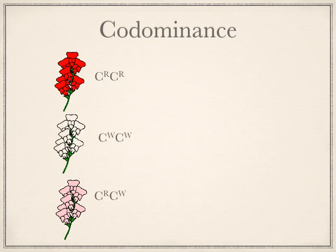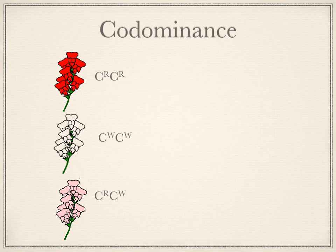Why do we use the letters R and W as superscripts instead of capital R and small r? This is because the alleles are codominant — one is not dominant over the other. Capital R and small r would represent a dominant and a recessive allele. Since they're codominant, we write them as superscripts on the letter representing the gene. The gene is for colour, so we write C for colour, with superscript R or superscript W. Notice that the heterozygous pink plant has two different letters.